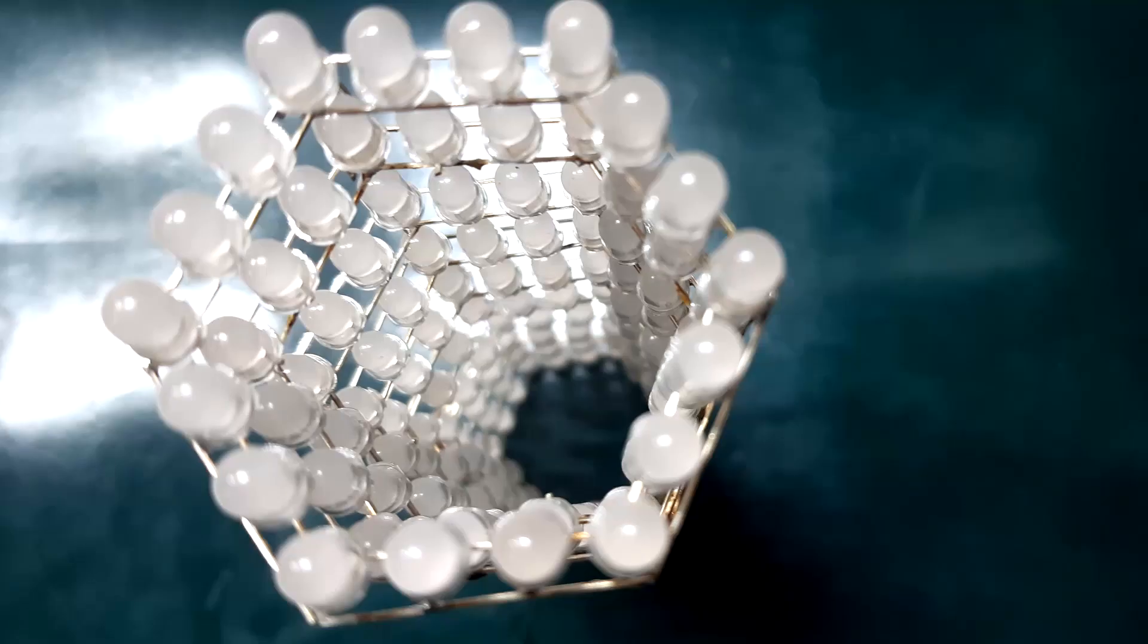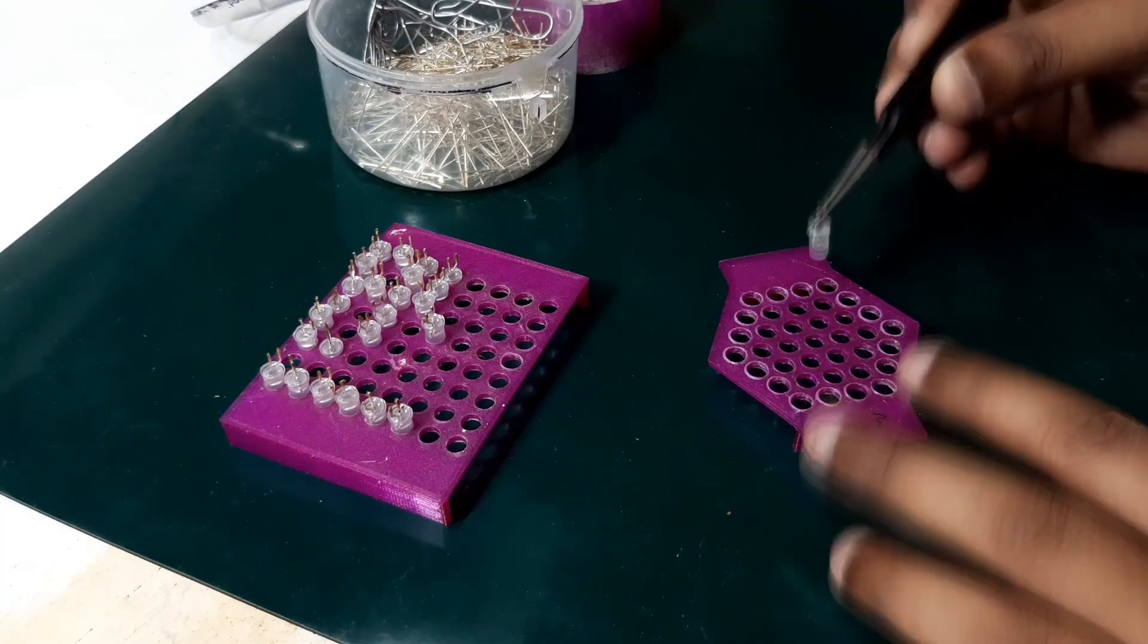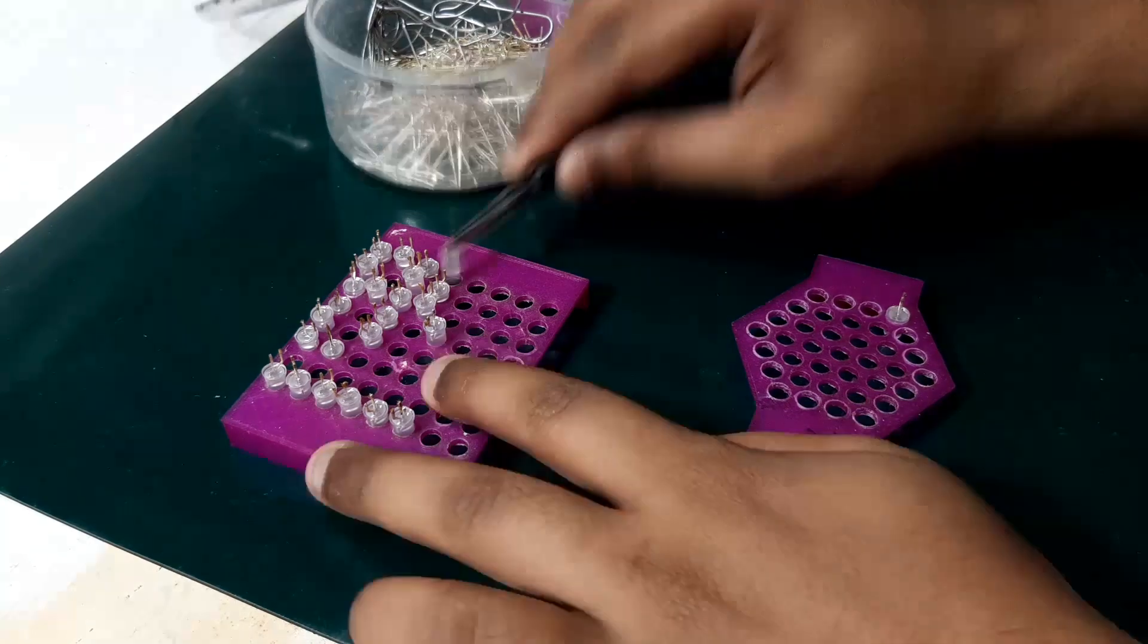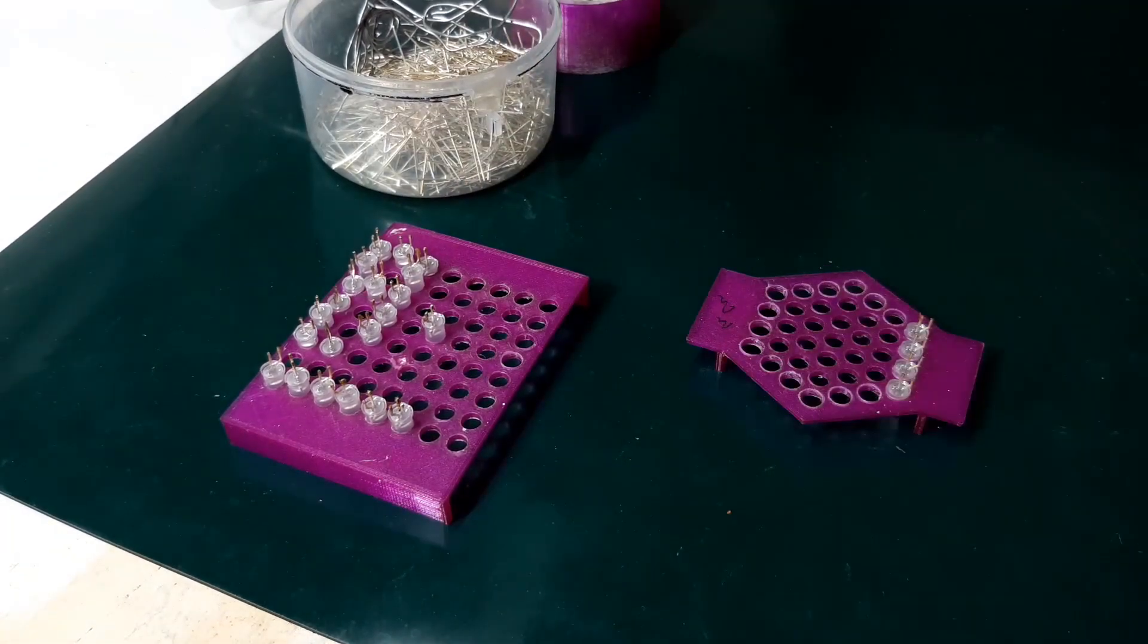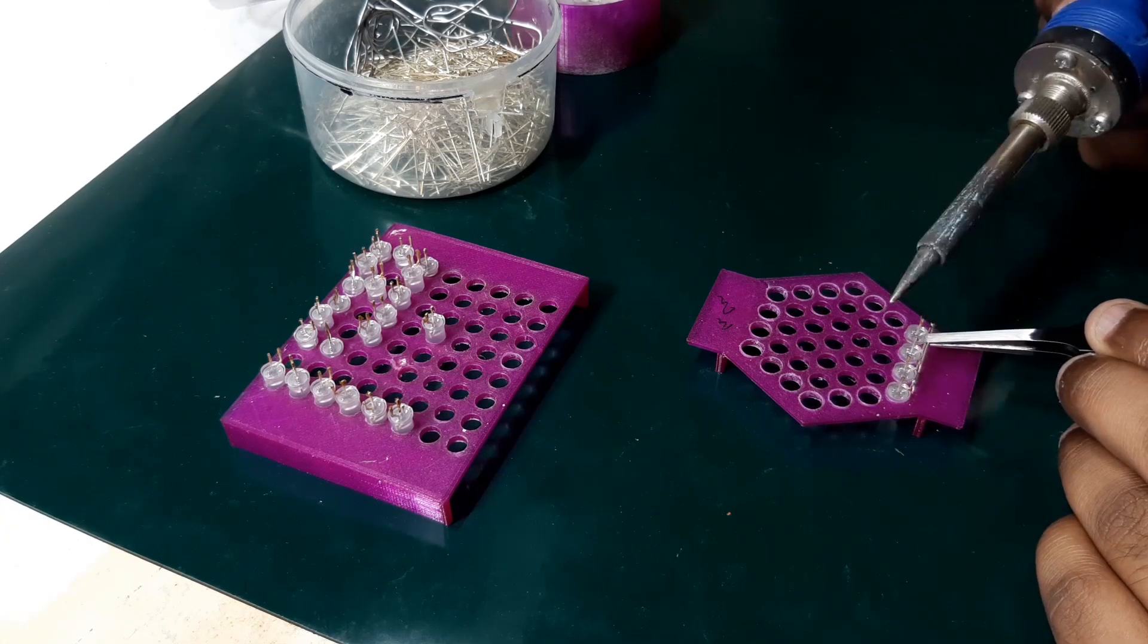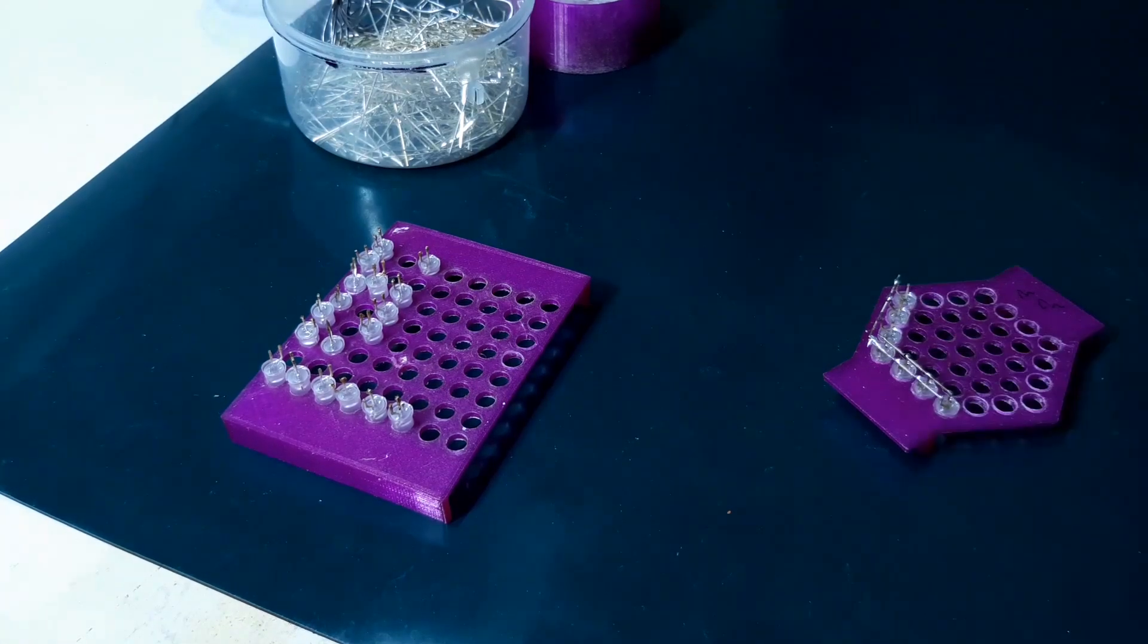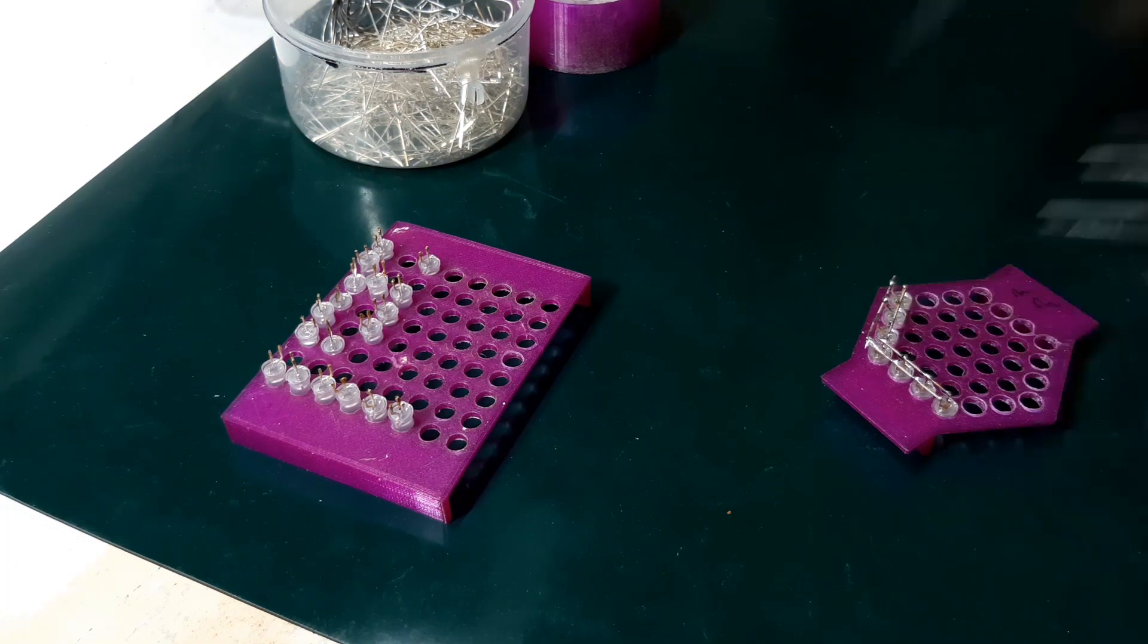Now how do we get started? Well, first we have to assemble the LEDs on the jig and align them in such a way that the positive end will be outside and the negative end will be facing inside. This is crucial as this will help in soldering all the levels together properly.